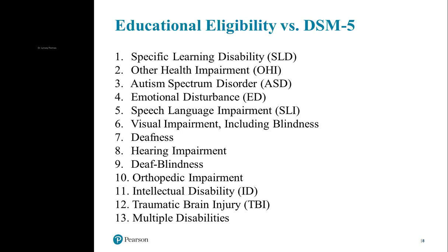Other categories include autism spectrum disorder; emotional disturbance, which covers a variety of mental health issues including anxiety, depression, and schizophrenia; speech language impairment such as articulation, stuttering, or expressive and receptive language issues; visual impairment; deafness; deaf-blindness; orthopedic impairment; and intellectual disability, which requires a cognitive assessment like the WISC or KABC and an adaptive assessment. There's also traumatic brain injury and multiple disabilities — when a child has multiple issues creating specialized educational need that doesn't fit neatly into any other category.